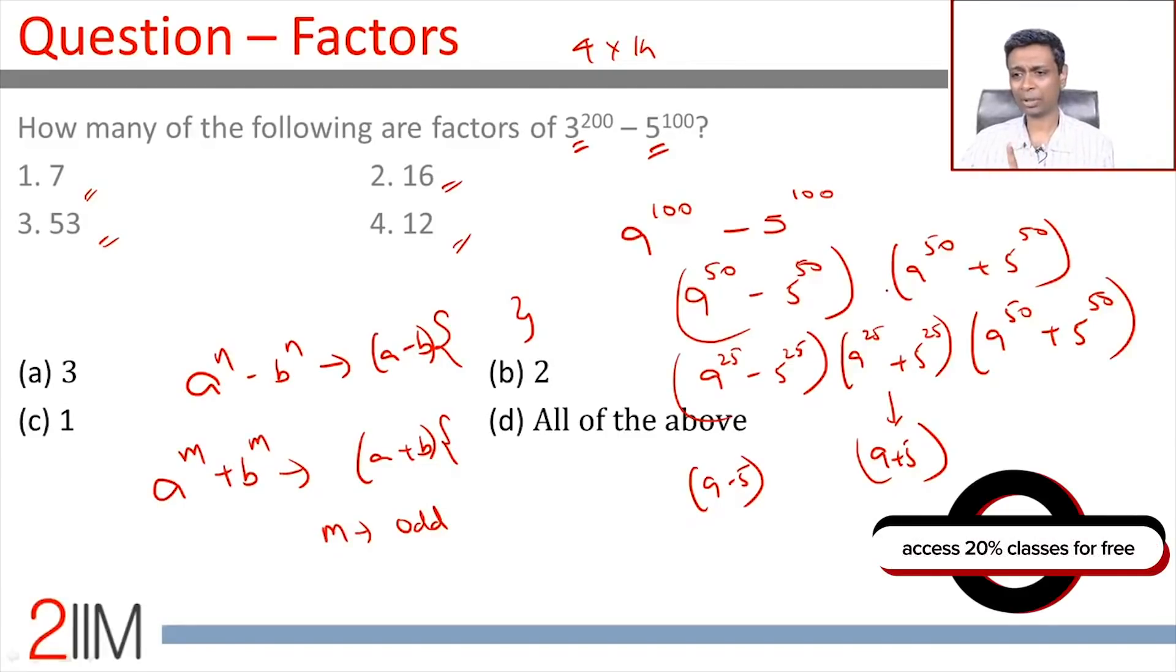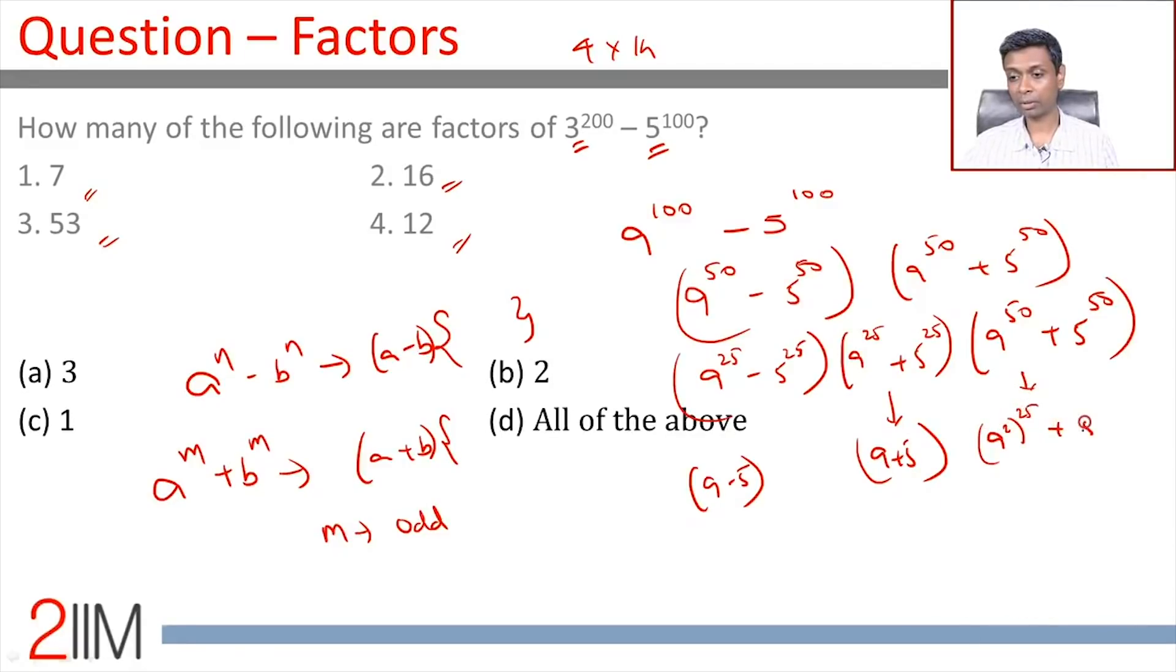9^50 + 5^50, now this is tricky, because 50 is not an odd number, this does not work. So, we could write this as (9²)^25 + (5²)^25. This can be written as 81^25 + 25^25. 81^25 + 25^25, this will be a multiple of 81 + 25, which is 106.